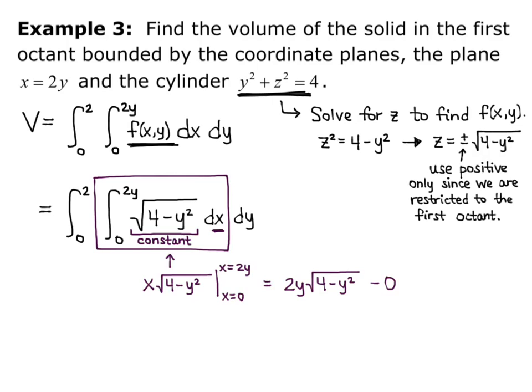So now I take that result and plug it into my outer integral, and I get the volume equals the integral from 0 to 2, of 2y square root of 4 minus y squared, dy. So now I just have to use a u substitution to solve this.